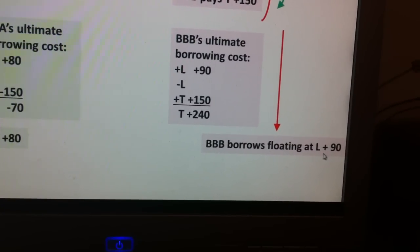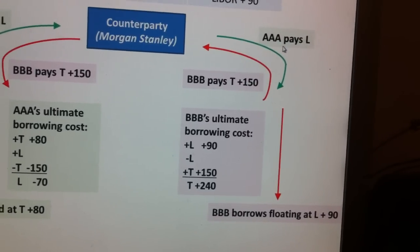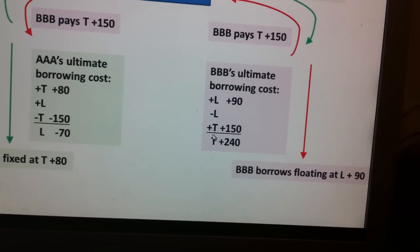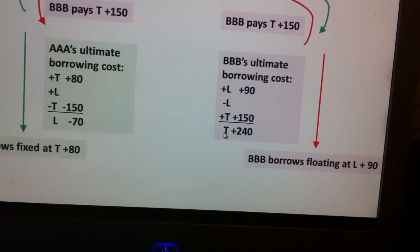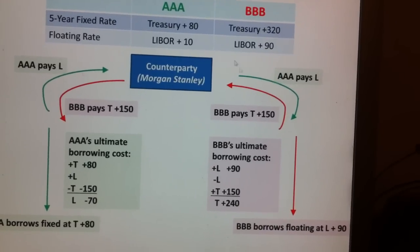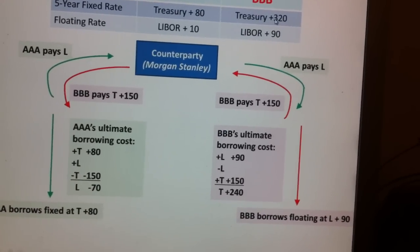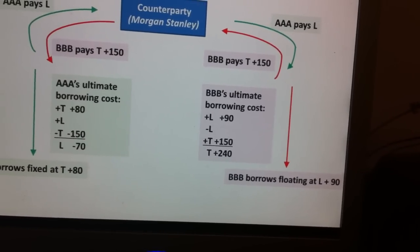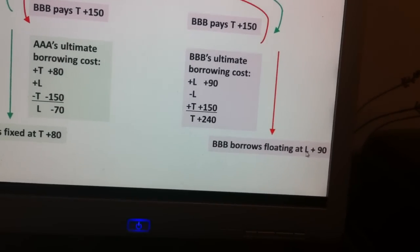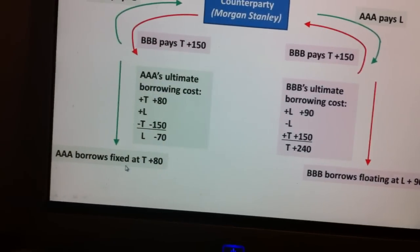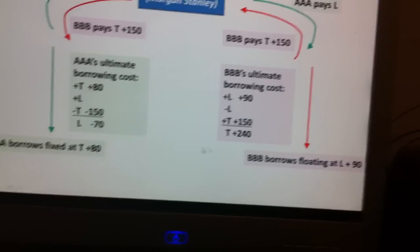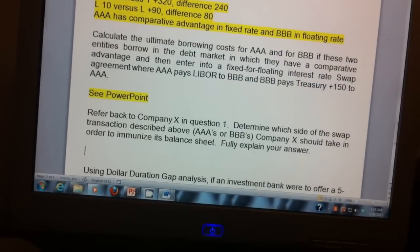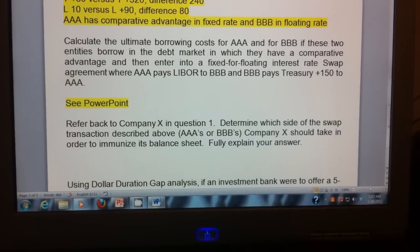Similarly for Triple-B: they started borrowing floating at LIBOR plus 90, received LIBOR from Triple-A, and paid Treasury plus 150 into the swap. The LIBORs cancel out, and they end up paying Treasury plus 240. Compared to what they would have paid in the market — Treasury plus 320 — they saved 80 basis points as well. More importantly, remember we're trying to find the entity that swaps from floating to fixed in order to increase the duration of liabilities. That entity is Triple-B. So when we go back to the Word document, the answer to which side of the transaction the bank should be on is Triple-B.